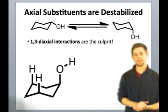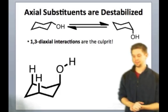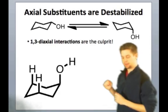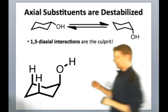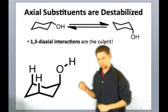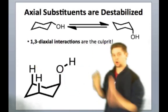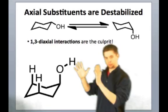So we see on this slide that axial substituents are destabilized. And this diagram will hopefully help give you an idea of why. In looking at a substituent that's axial, we see that it's got two other axial substituents only two carbons away, and they're pointing up directly at it.